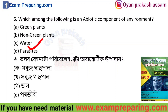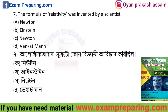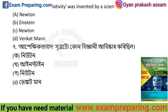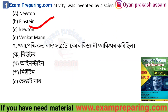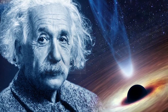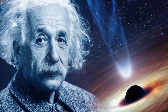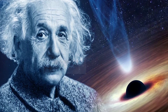The answer is water. What does the theory of relativity mean? The formula of relativity was invented by a scientist — the famous Albert Einstein.